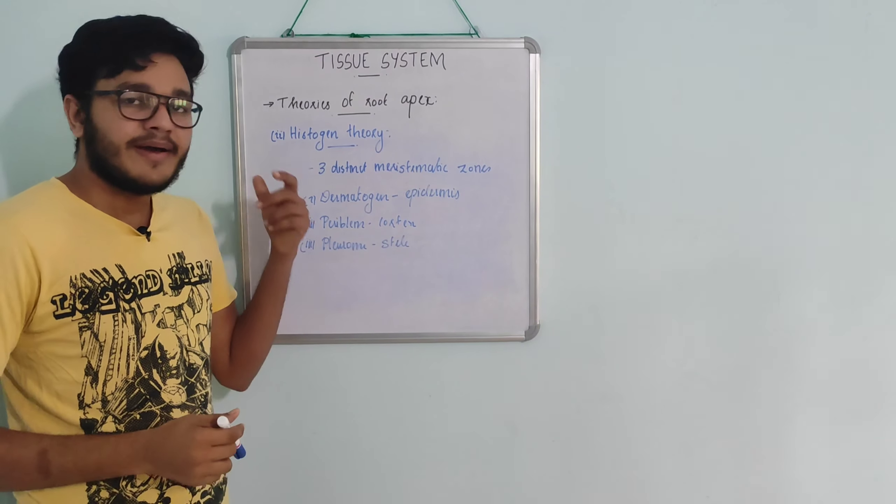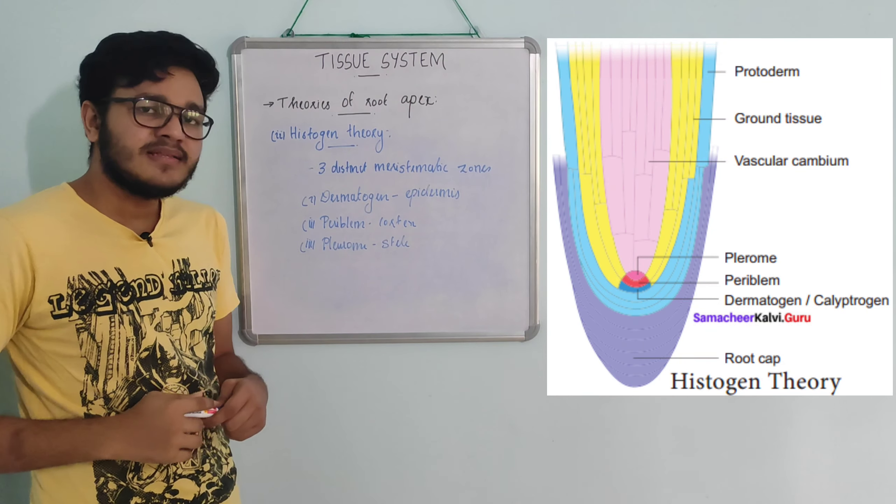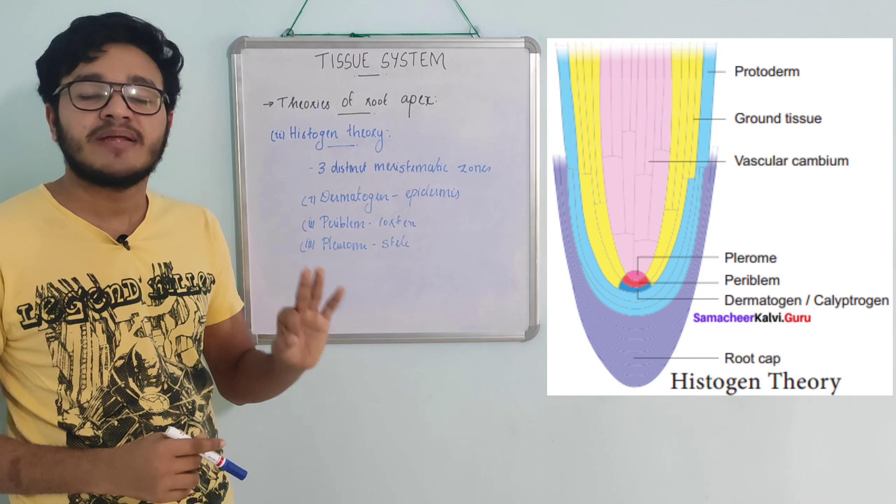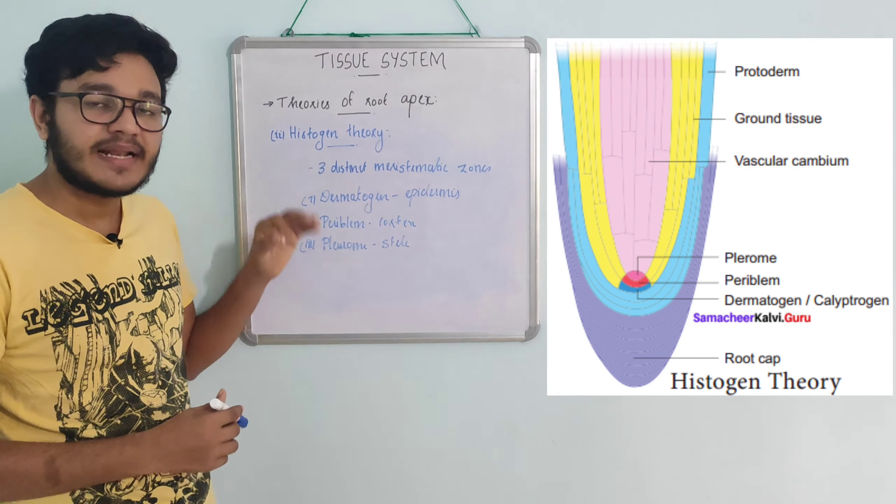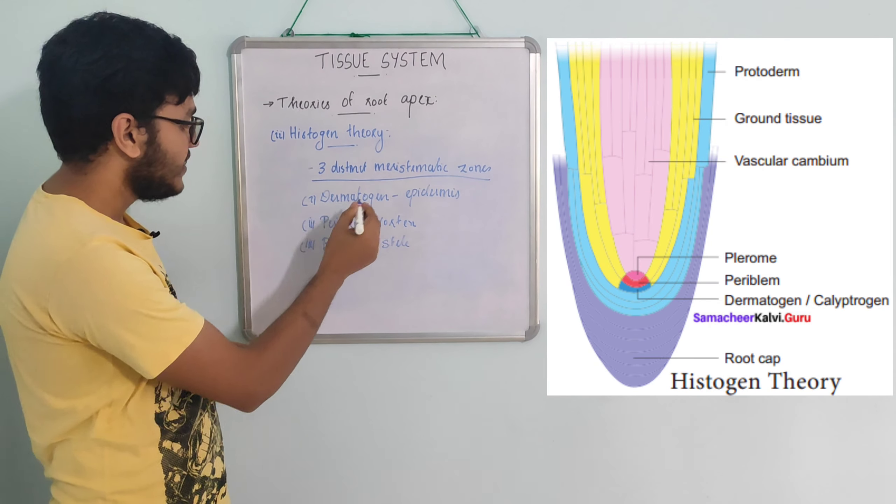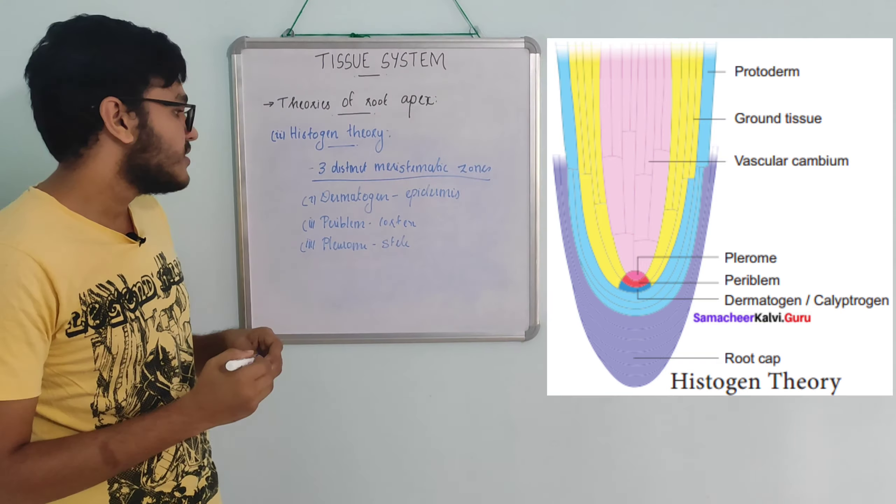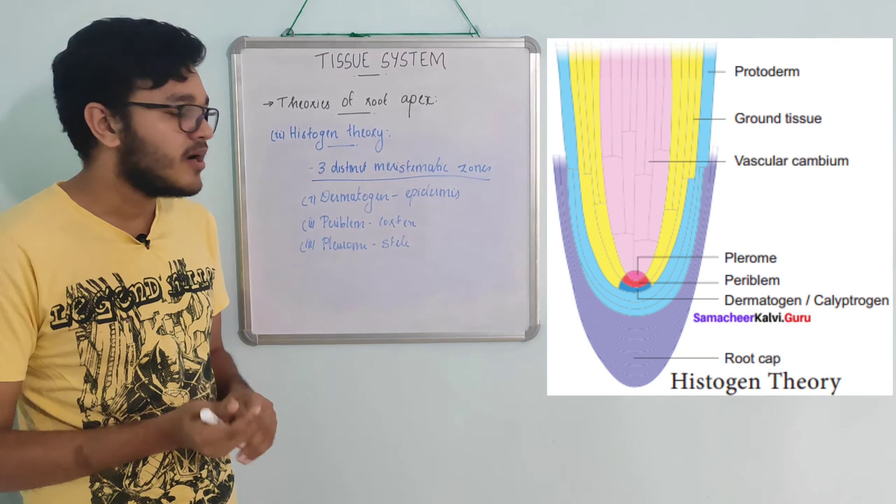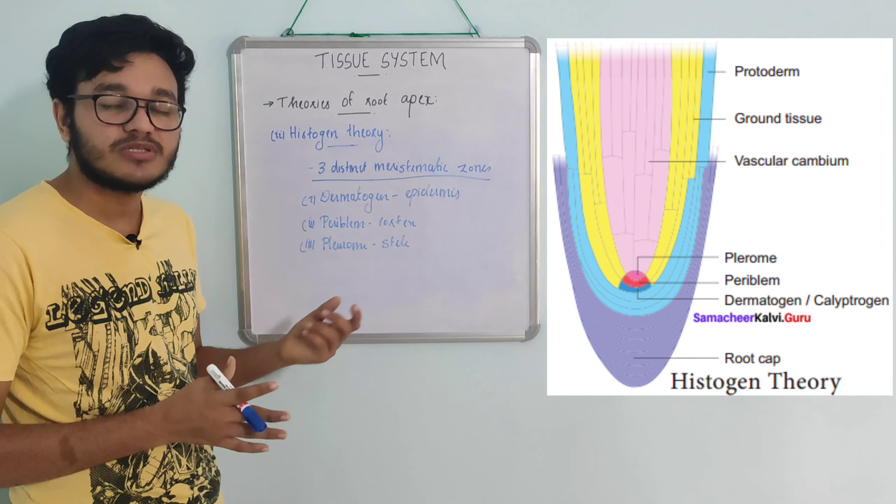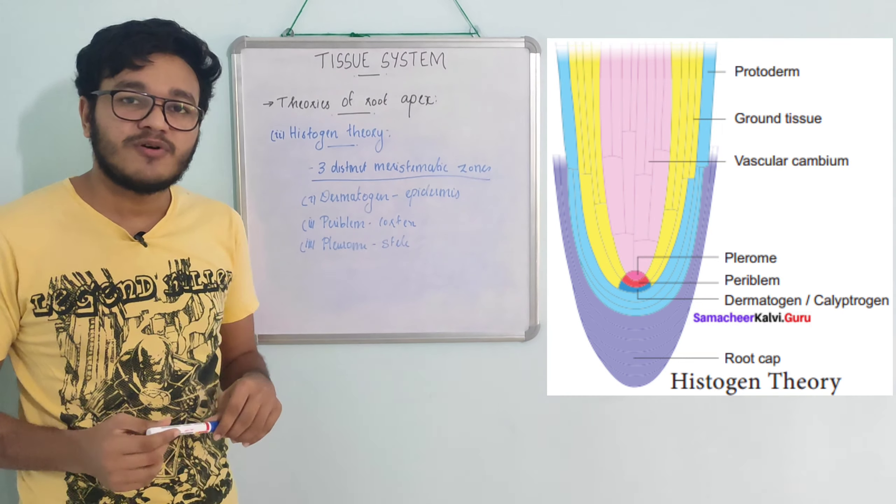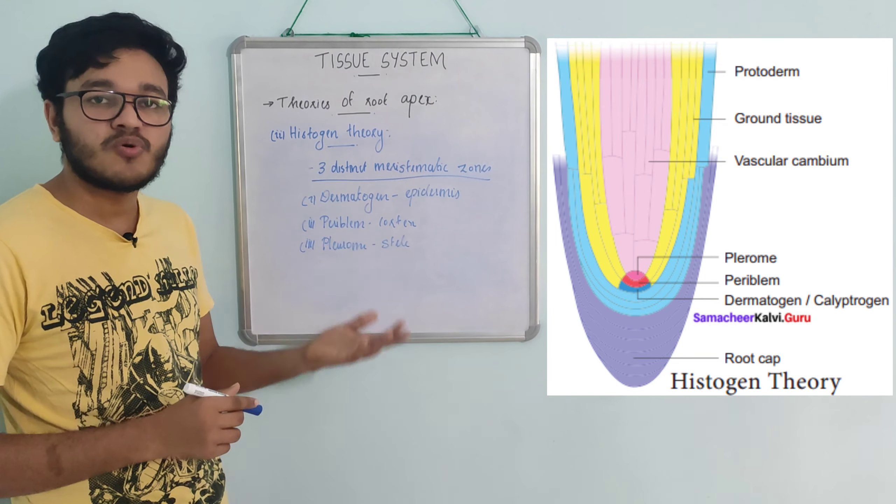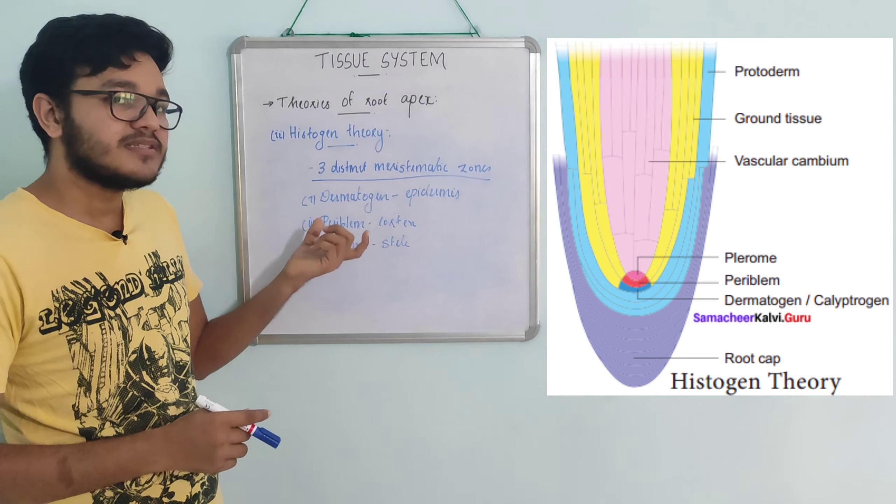The second theory is the histogen theory. This theory describes three distinct meristematic zones in the root: dermatogen, which gives rise to the epidermis; periblem, which forms the cortex; and plerome, which develops into the vascular portion. This is similar to shoot apex organization.